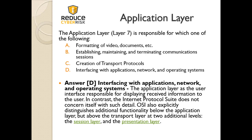The answer is D — interfacing with applications, networks, and operating systems. The application layer, as the user interface, is responsible for displaying and receiving information to the user — i.e., the application. The internet protocol suite does not concern itself with such detail, which is why OSI explicitly distinguishes additional functionality between the transport layer and the application layer, including the session and presentation layers.